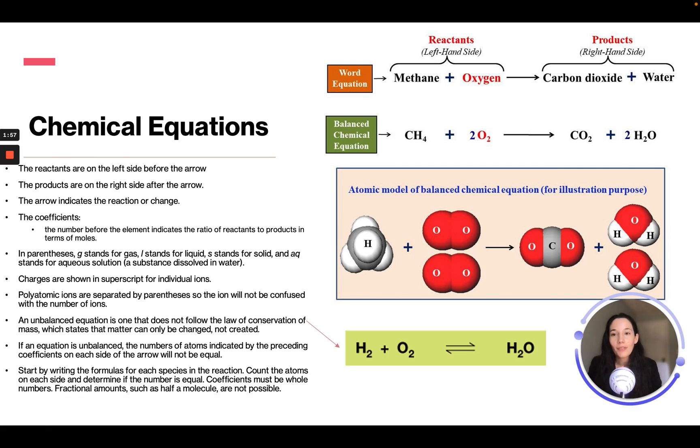The reactants are on the left side before the arrow. This is the way typically a chemical reaction will be written. So, the reactants are going to be on the left-hand side, and the products are going to be on the right-hand side of the arrow. The arrow indicates the reaction or change. This is the word equation, and this would be the way the chemical equation would be written.